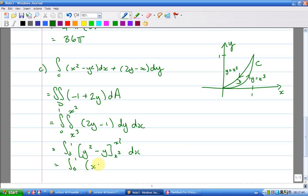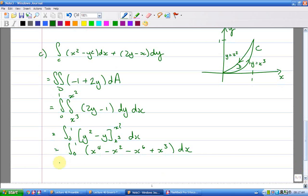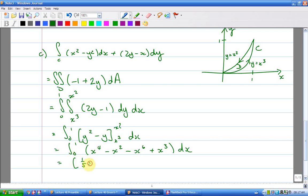So what do we have? We have y squared minus y evaluated from x cubed to x squared. So that'll be x to the 4 minus x squared, subtract x to the 6, plus x to the 3, which is 1 fifth x to the 5, minus 1 third x cubed, minus 1 seventh x to the 7, plus 1 quarter x to the 4.